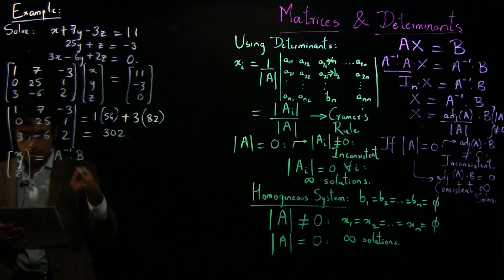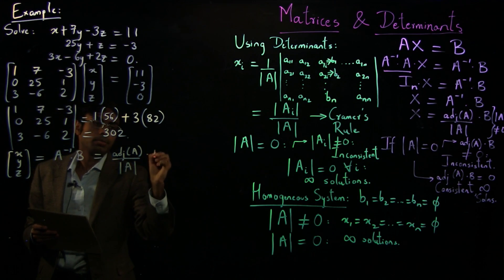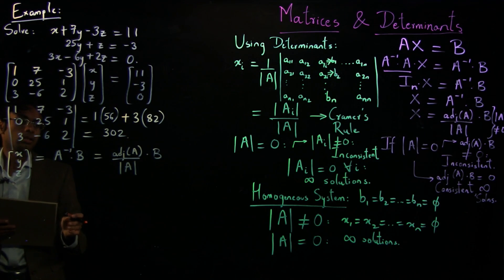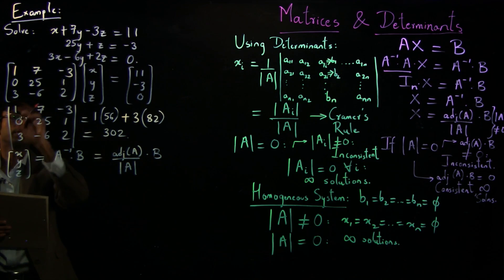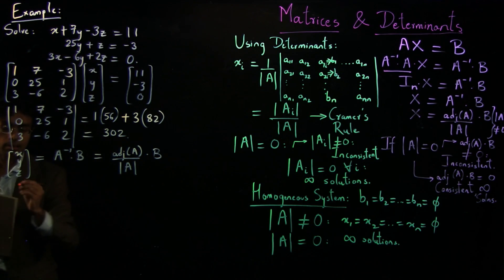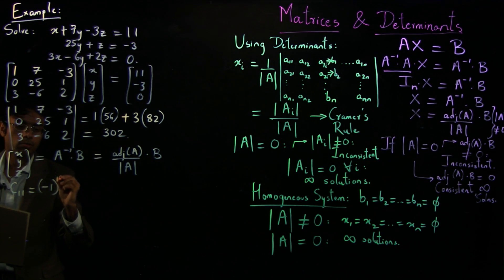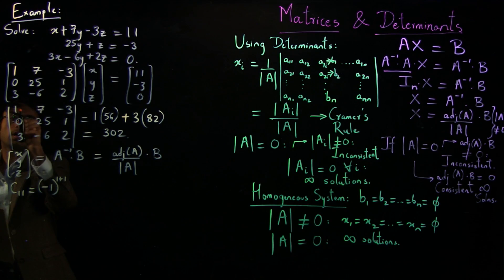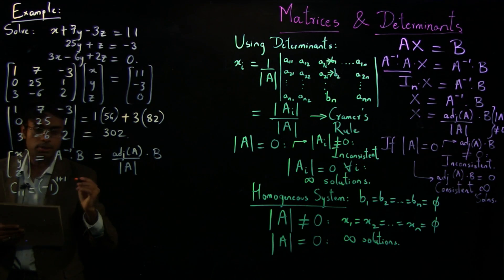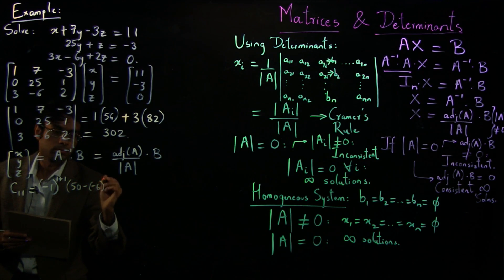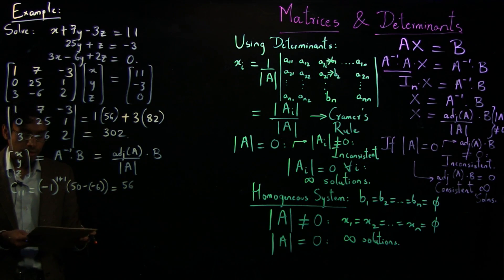And to do that, you first need to find out A inverse. So that is adjoint of A times B over determinant of A. And for calculating the adjoint, you need to find out the cofactors of each element of A. And so let's take an example to recall. C11 is minus 1 to the power i plus j, so 1 plus 1. And then you block this off, block this off, so 50 minus minus 6, so 56. And so on. I'll leave it as an exercise for the reader to calculate each cofactor.